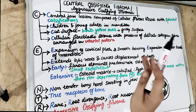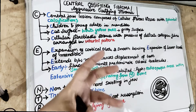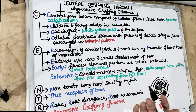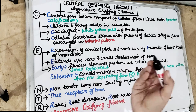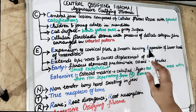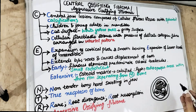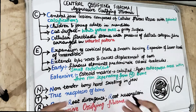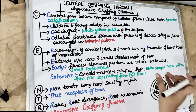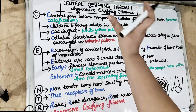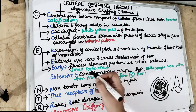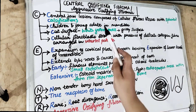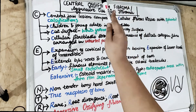The cellular fibroblastic mass present shows delicate collagen fibers arranged in a whorled pattern. Expansion of the cortical plate is seen, and there is smooth bowing expansion of the lower border of the mandible. Because this mass is present between the roots, it is going to displace the teeth. In early lesions, there is a fibrous element with osteotrabecular pattern. Initially the lesion is fibroma; later on this radiolucent mass becomes more bone-like — it becomes ossified and calcified.